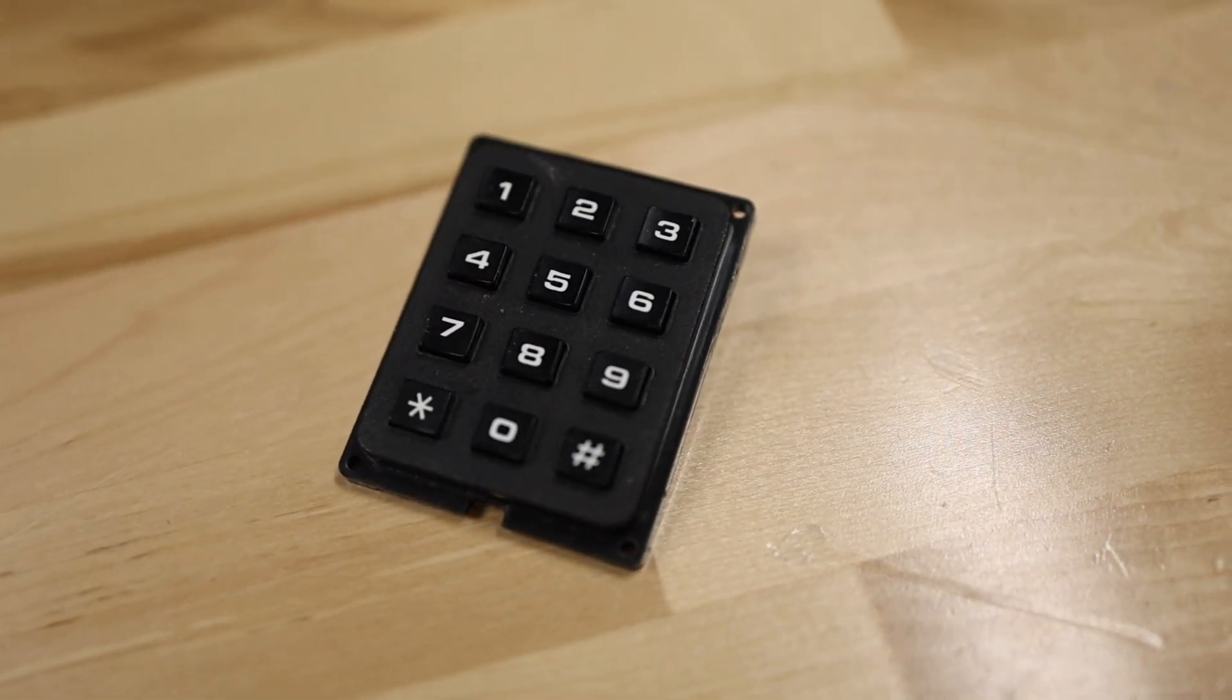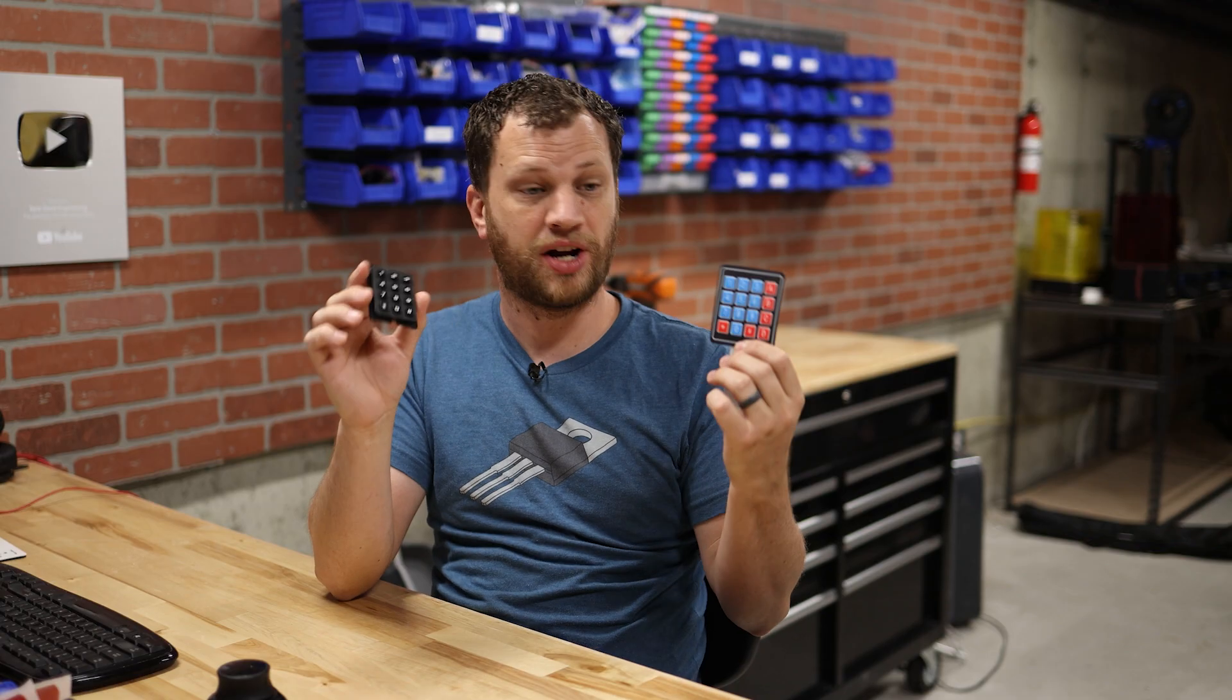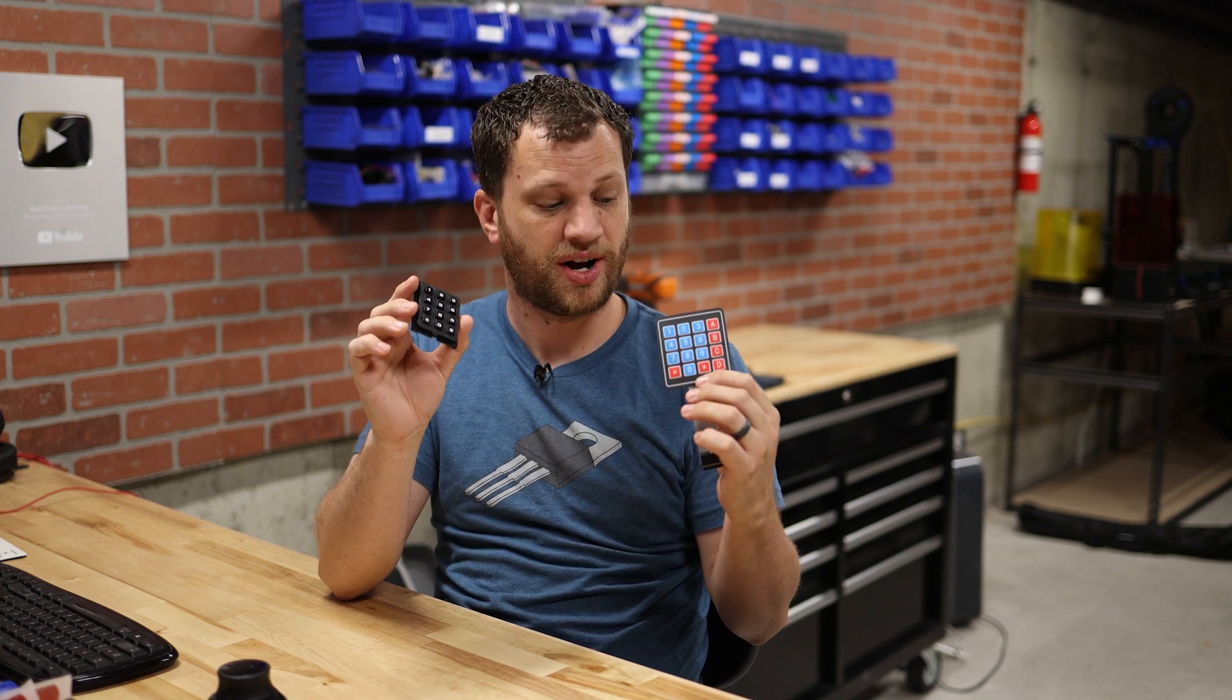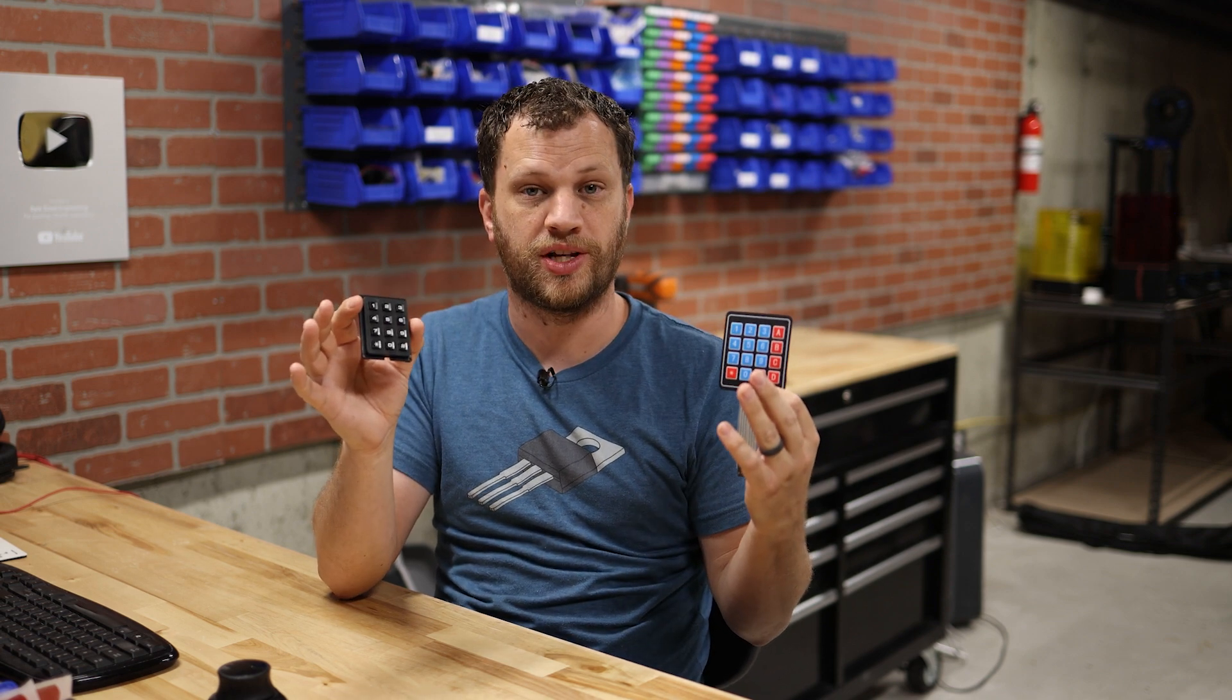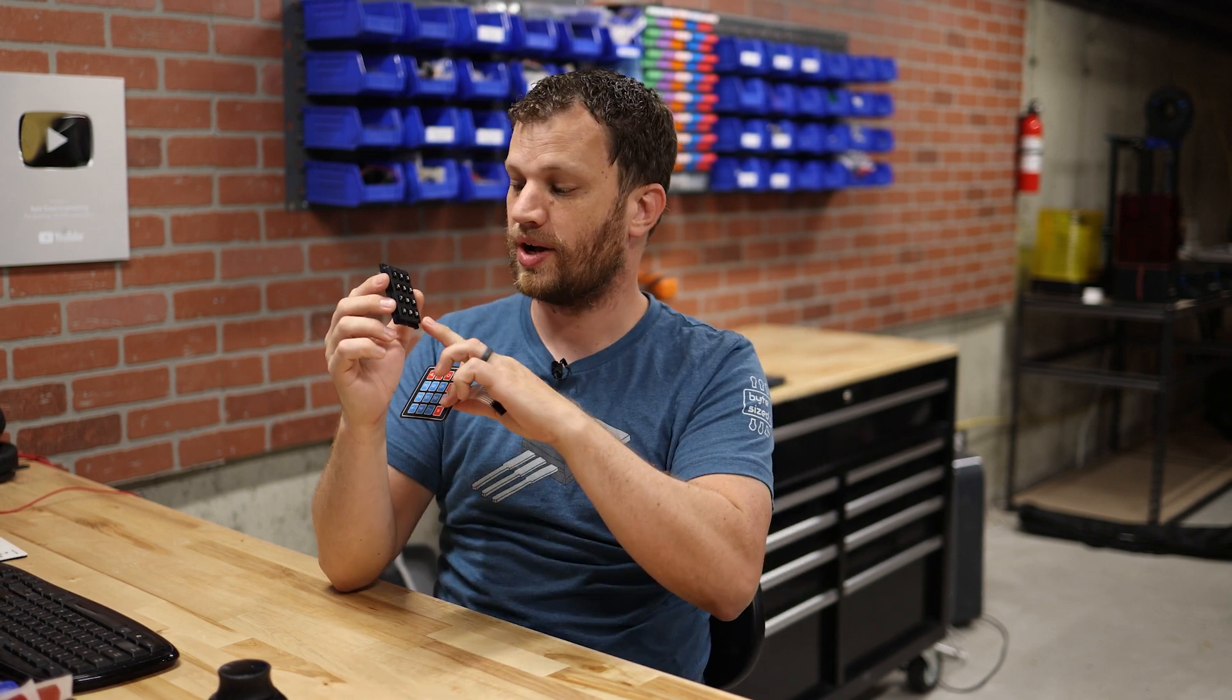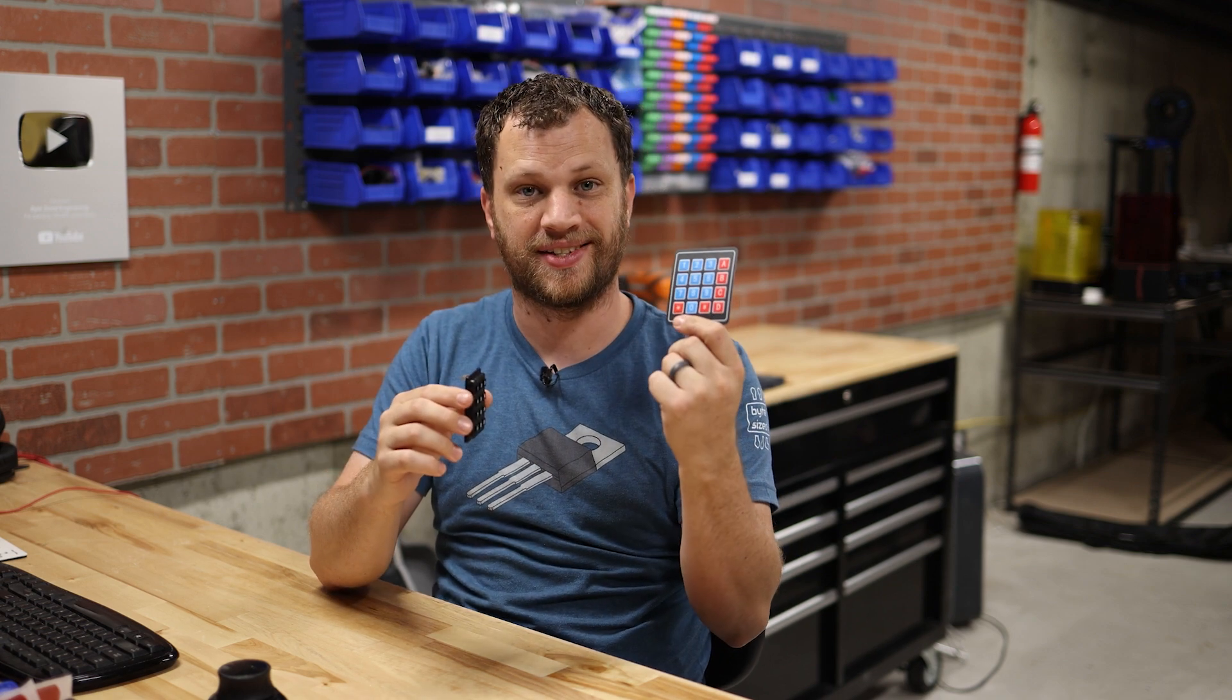So we've seen how multiplexing can be used to reduce GPIO pins for outputs, but what about inputs? To help explain that, I'm going to use a matrix keypad. I have a couple of numeric keypads here. These are often found on point of sale machines where you type in your pin. This has 12 individual buttons and this one has 16. If you were going to read these individually, it would require 16 GPIO pins. But again, we can use multiplexing to reduce that number.